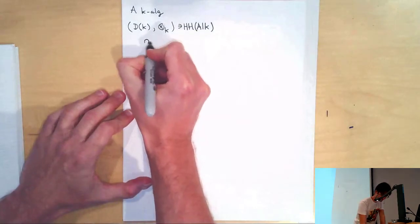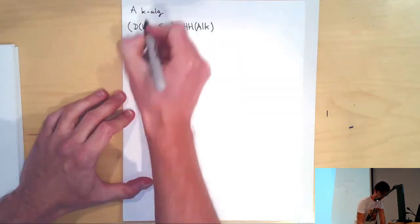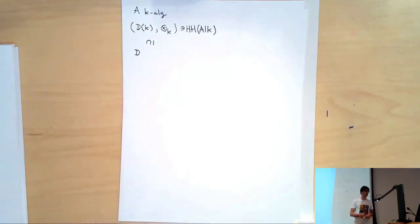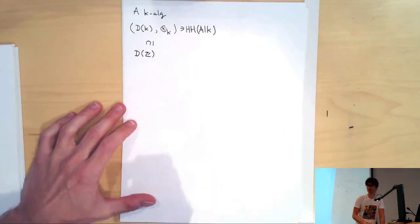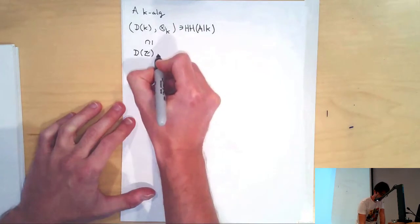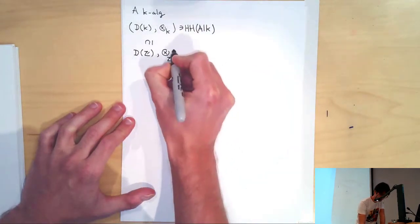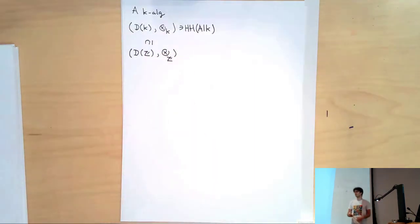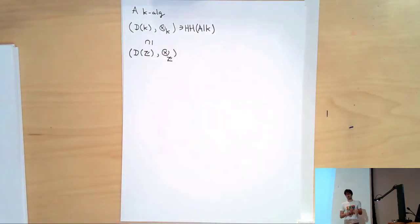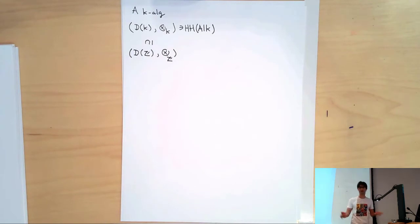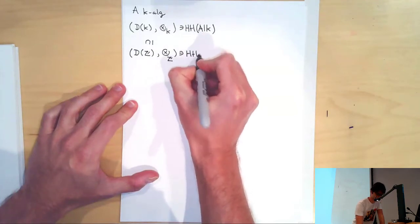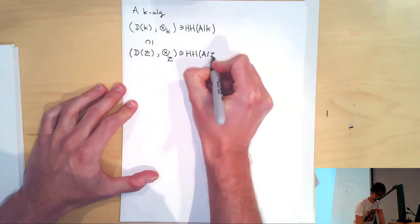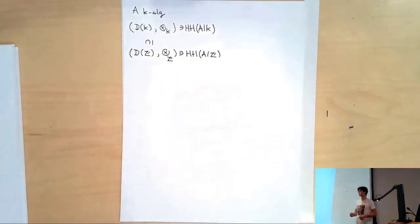Now let me make an abusive observation. Instead of thinking about complexes of K-modules, we note that any complex of K-modules is a complex of abelian groups. And instead of tensoring over K, I could tensor over Z. My K-algebra A is, of course, also a Z-algebra — that is to say, a ring — if I forget the K-linear structure. Then I can repeat the construction and get Hochschild homology of A viewed just as a Z-algebra, where tensor products are now over Z.